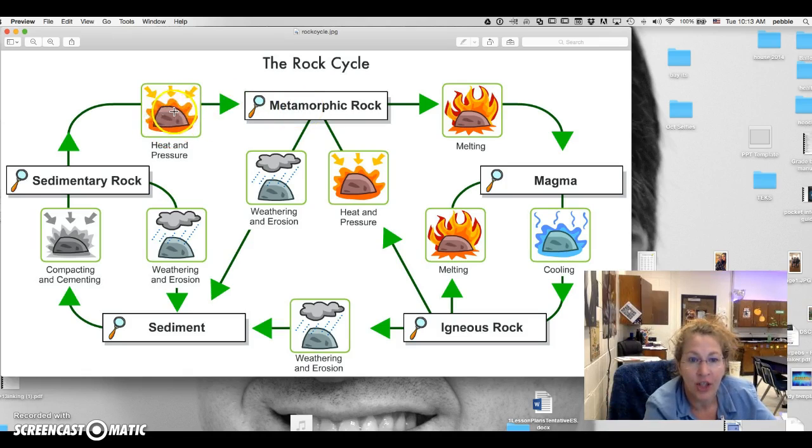Then we go to sedimentary rocks, and you have clastic, which means they're made up of little bitty pieces of other stuff. Clastic meaning it's all pieces of everything else that's been glued together. You have organic, which means it's dead things all smushed together.